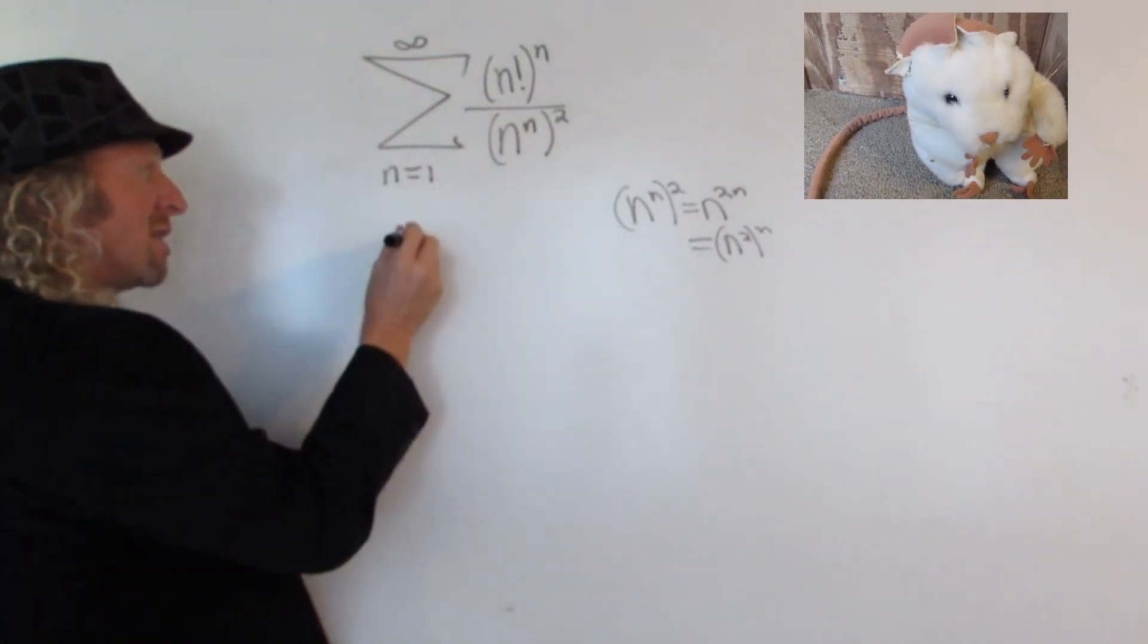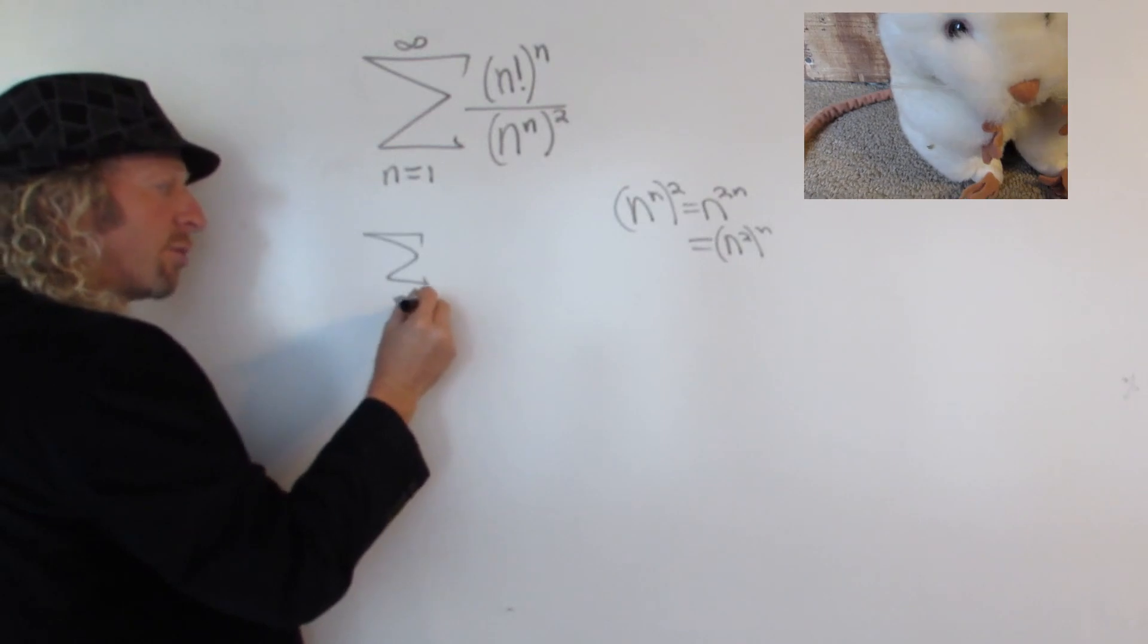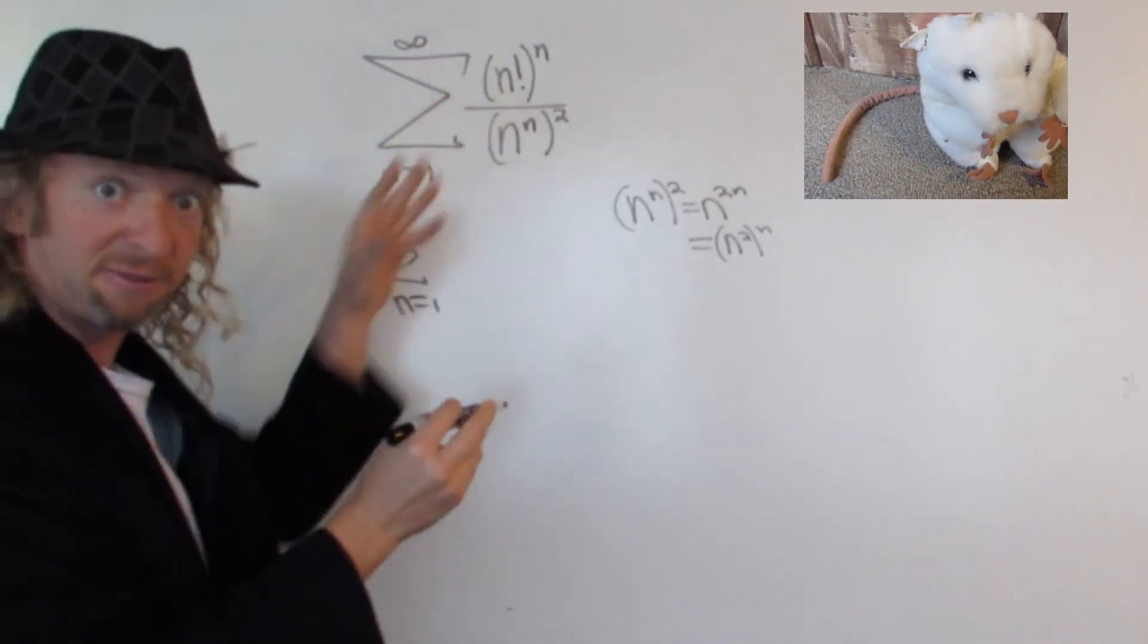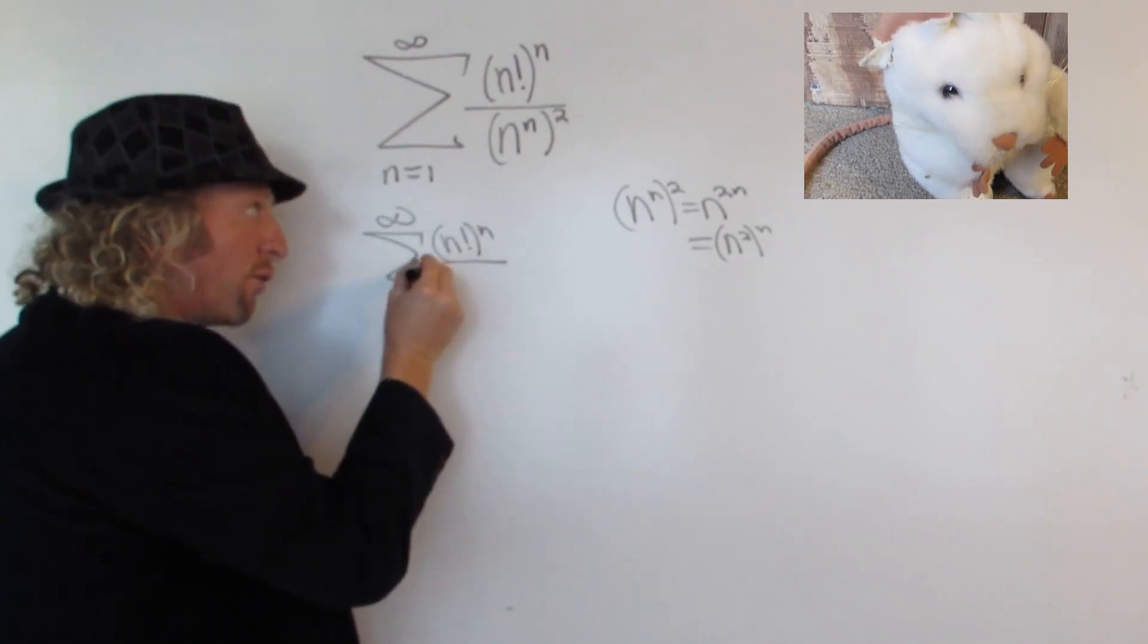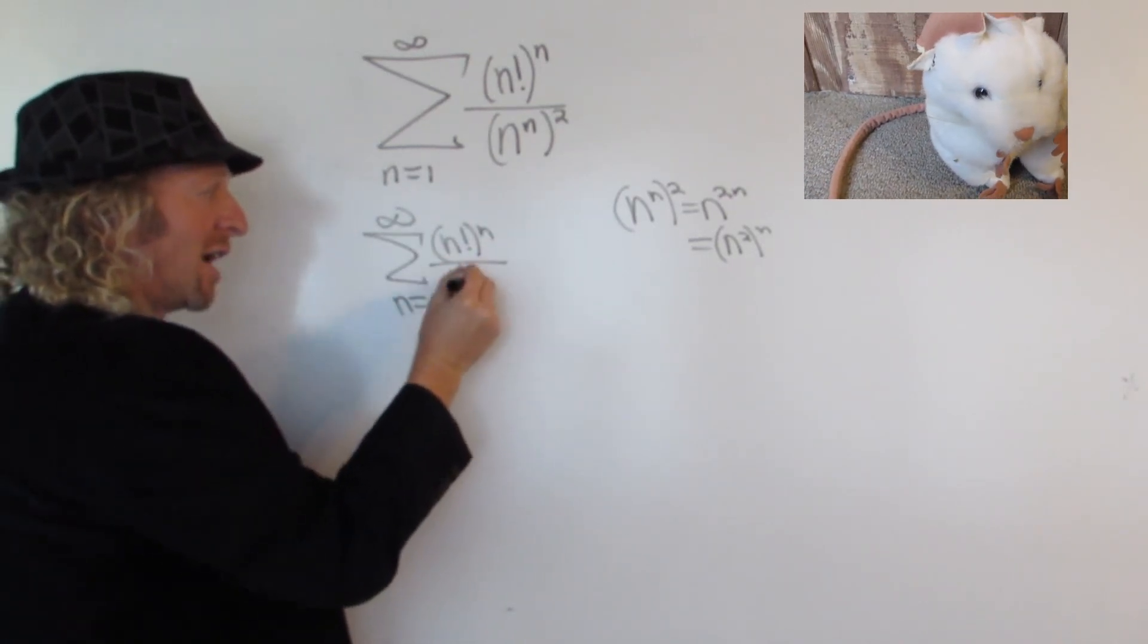So we can write this as the infinite sum as n goes from 1 to infinity of n factorial to the n, so n factorial to the n over n squared to the n.